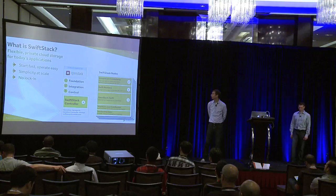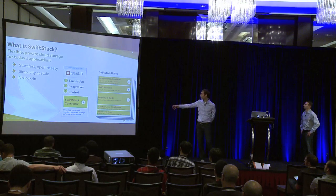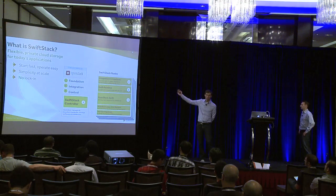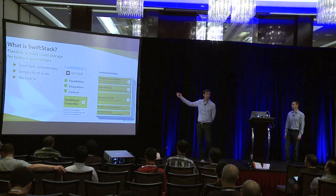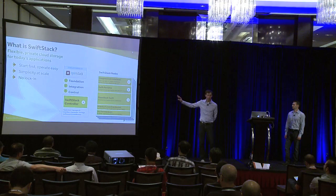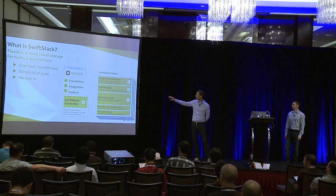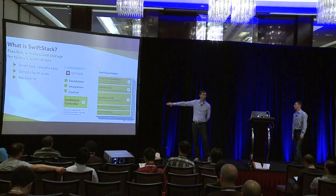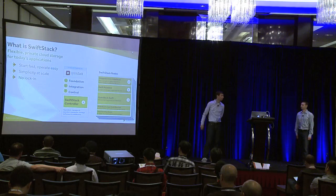We have two components. On the right-hand side we have SwiftStack nodes, which is a Swift runtime. That includes a UI for users, load balancing integrations, authentication options like LDAP and Active Directory, and then Swift itself. We have the project technical lead and a lot of the core contributors to the project, so we're able to drive innovation and do a lot of fixing in Swift itself. We install on standard Linux distributions — Ubuntu, Red Hat, CentOS — and can run on all sorts of standard hardware. Then we have a controller which helps manage, deploy, operate, and scale the environment.